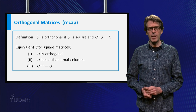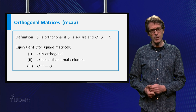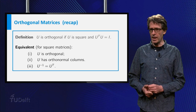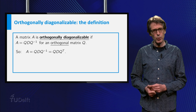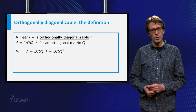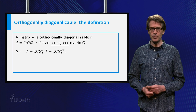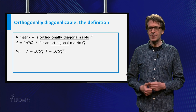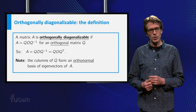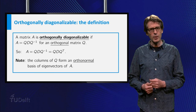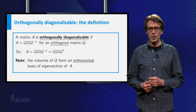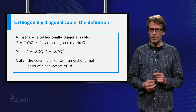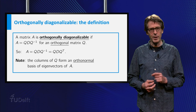Now I can explain what orthogonally diagonalizable means for a matrix A. It means that A can be written as Q times the diagonal matrix D times Q inverse, for an orthogonal matrix Q. This is the same as saying there exists an orthonormal basis of R to the n consisting of eigenvectors of A. Note that these eigenvectors are precisely the columns of the matrix Q.